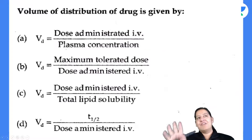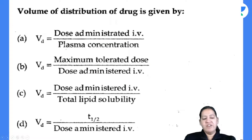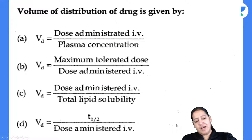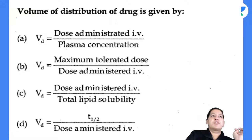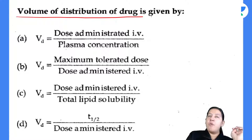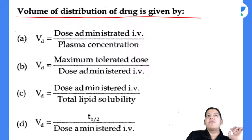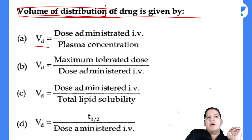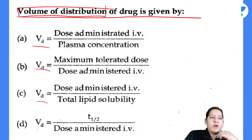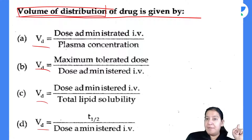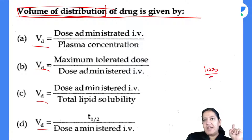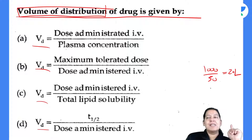First question: what is the formula of volume of distribution (VOD)? In the experiment I described, it was 1000 upon 50 = 20 liters. The 1000 is the dose administered IV, and the 50 is the plasma concentration. So the formula is: Volume of Distribution = Dose administered IV / Plasma concentration. The correct answer is A.